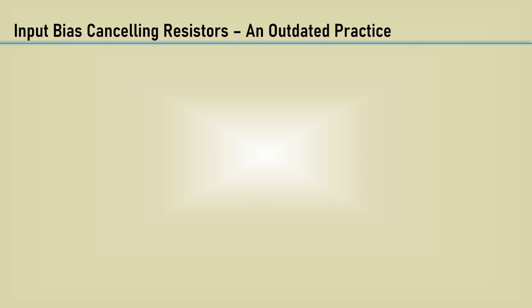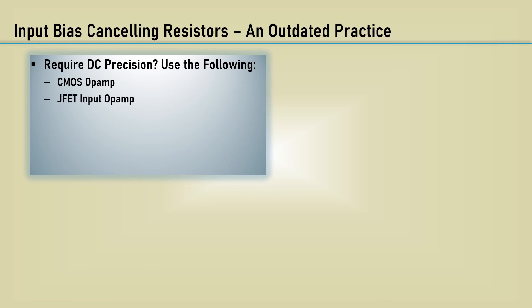Using the input bias canceling resistors is an outdated practice. If DC precision is required, use a CMOS op-amp that has super low input bias current. JFET input op-amps also have very low input bias current. There are several bipolar op-amps that have internal bias canceling using laser trim techniques. Also, bear in mind, the input offset voltage is a major contributor that isn't addressed by this bias current canceling resistor. Just pick the right op-amp for your DC precision needs and forget this old practice.